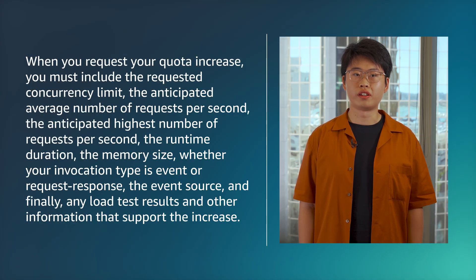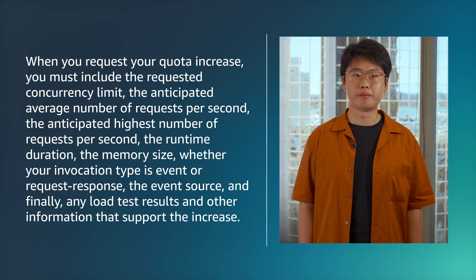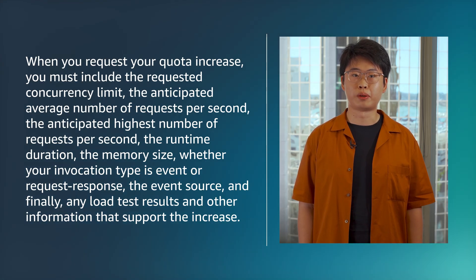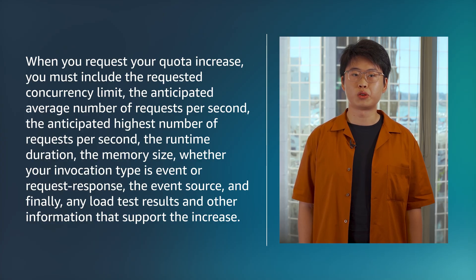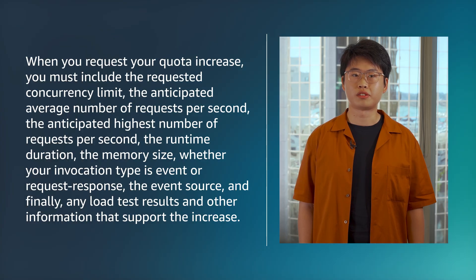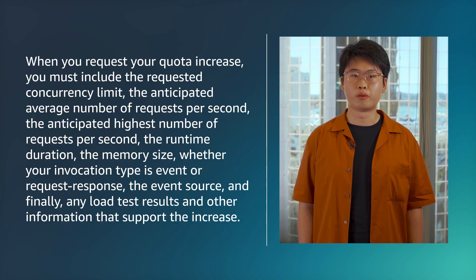When you request your quota increase, you must include the requested concurrency limit, the anticipated average number of requests per second, the anticipated highest number of requests per second, the runtime duration, the memory size, whether your invocation type is event or request response, the event source, and finally, any load test results and other information that support the increase.